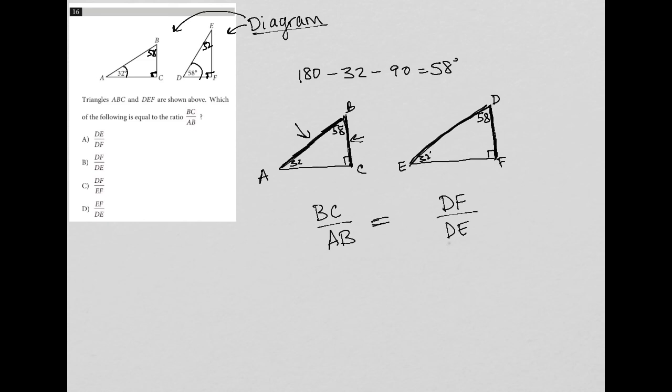So this should be the case. Ratio BC to AB should be equal to the ratio DF to DE. And therefore, the correct answer here is choice B.